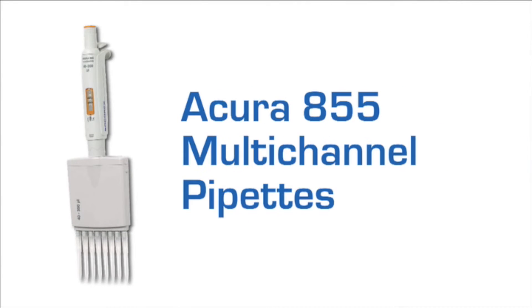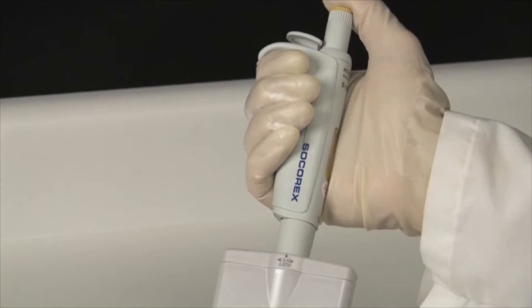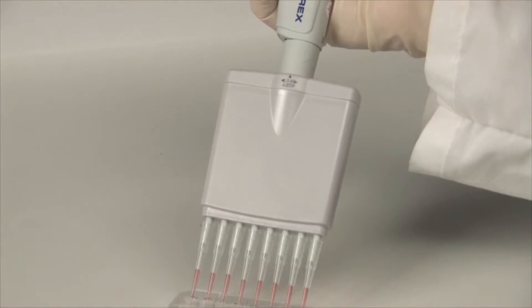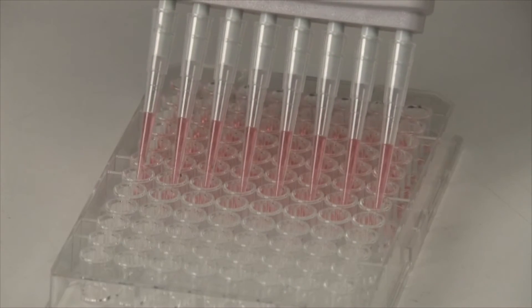The Acura manual 855 multi-channel models come in both 8 and 12-channel models to enable high-throughput pipetting with microplates.